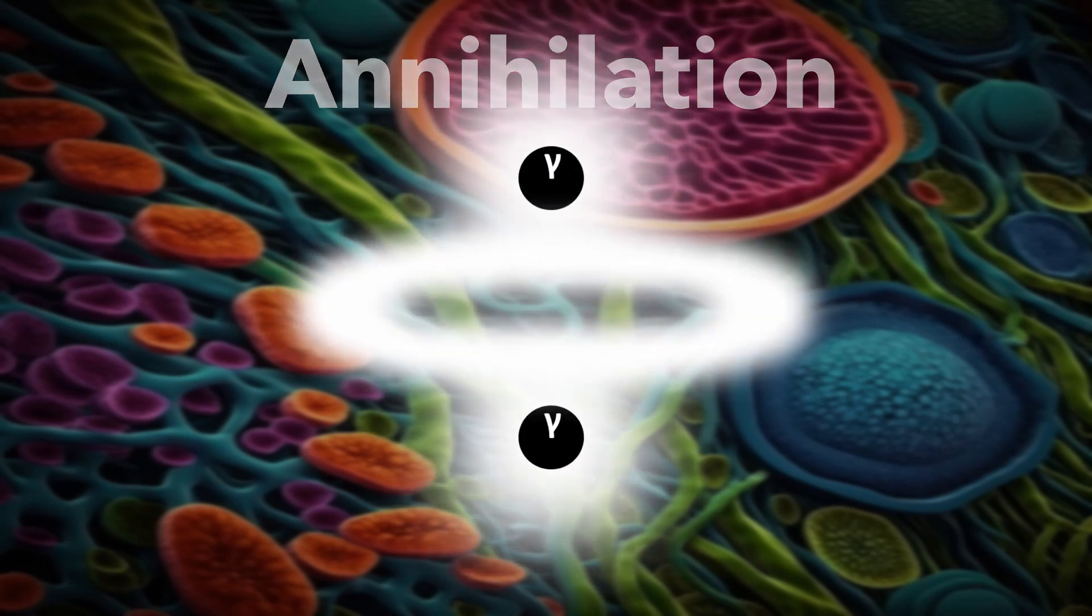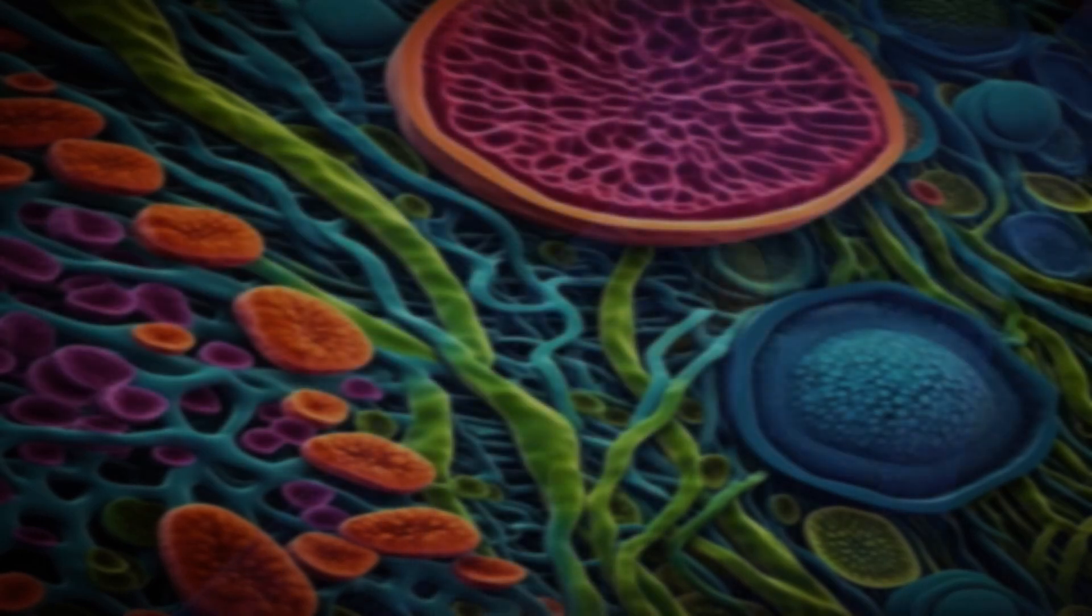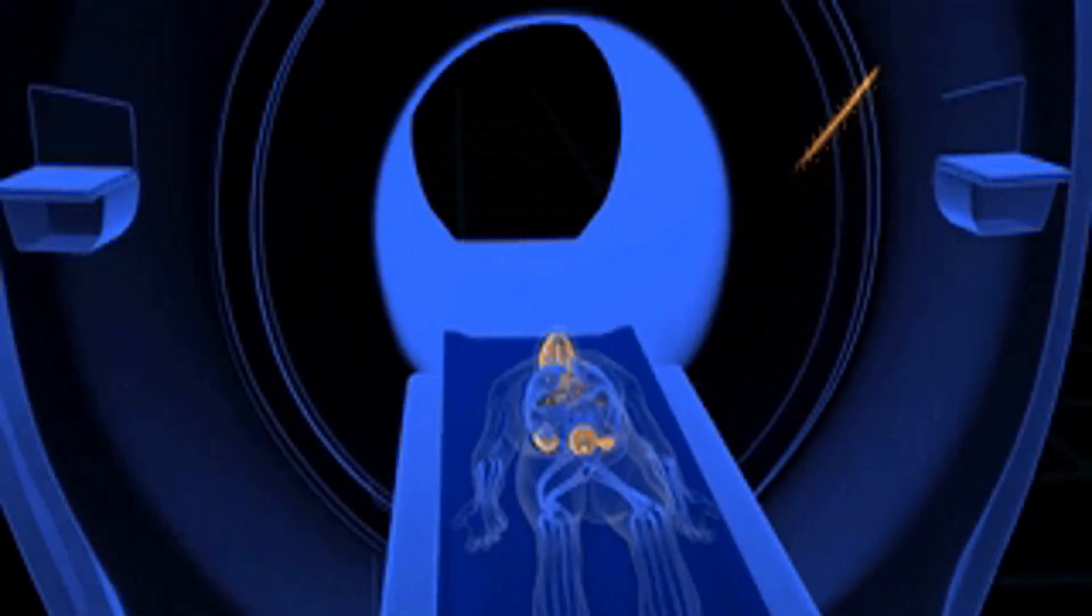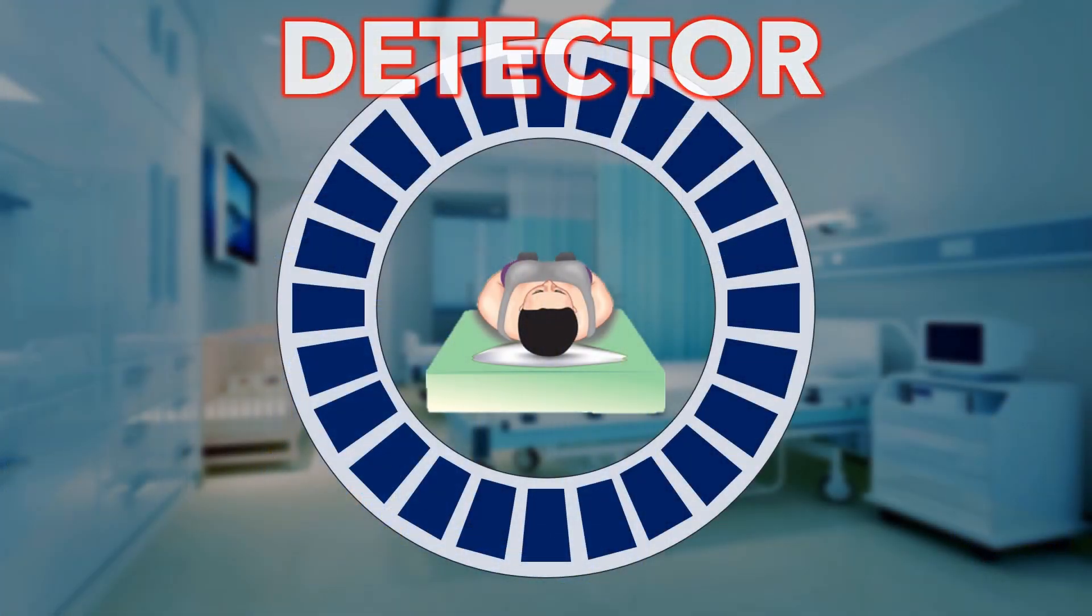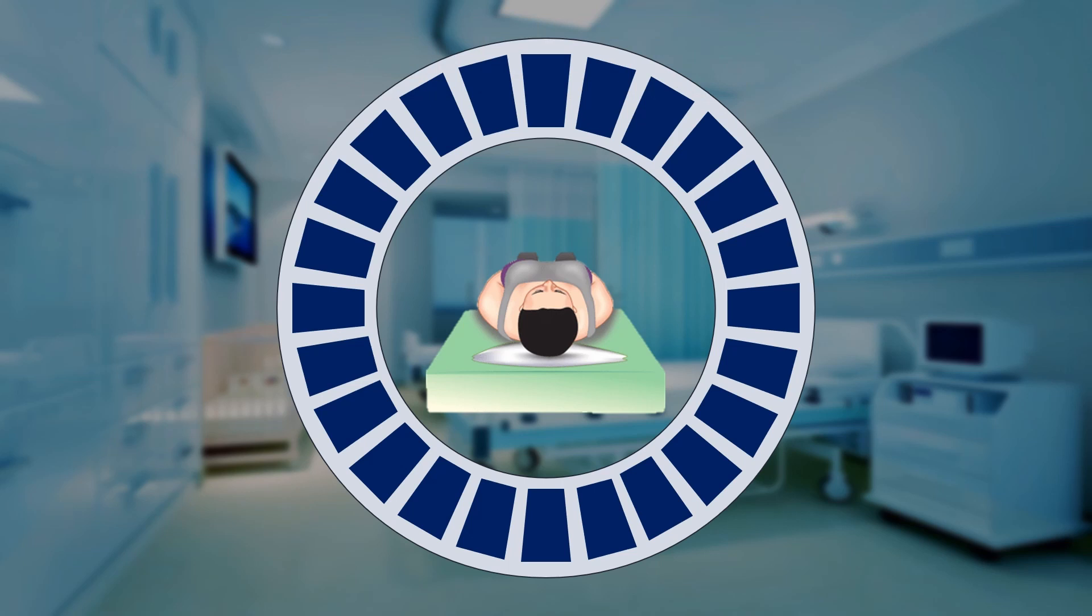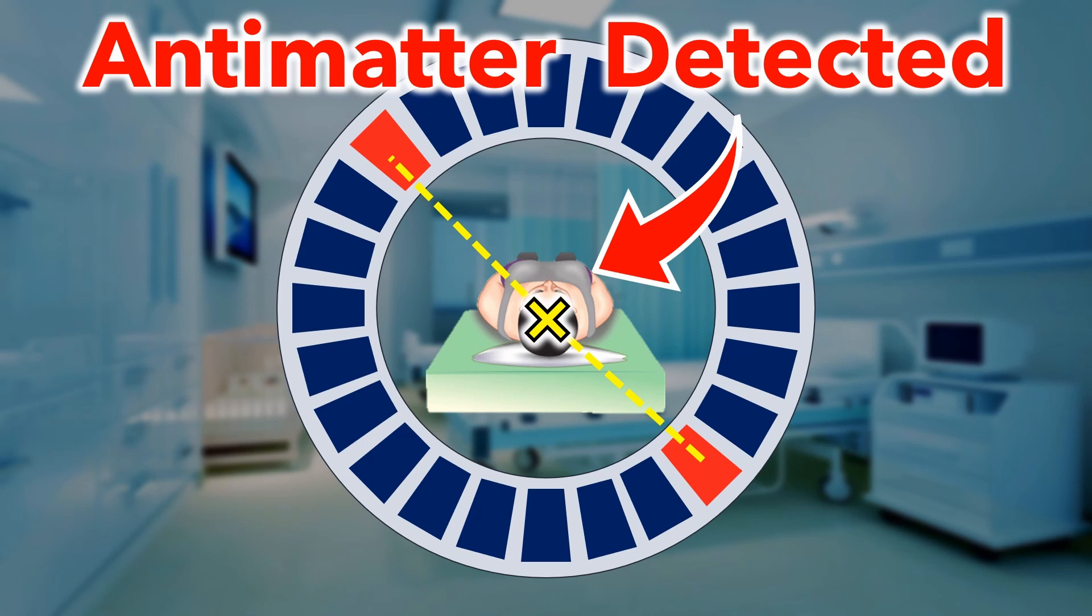The two gamma rays leave the patient's body in opposite directions and reach a detector. Basically it's a camera that uses gamma rays instead of light. Based on the time taken for the gamma rays to reach the detector, the exact location of the annihilation is calculated.